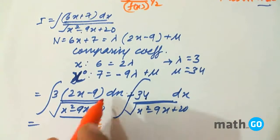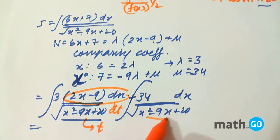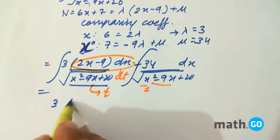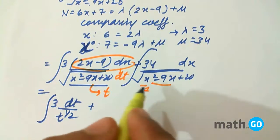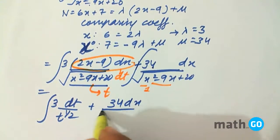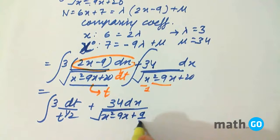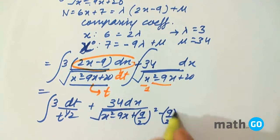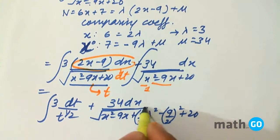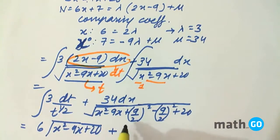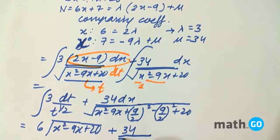If this is t then this becomes dt. We have to convert this. The coefficient of x square is already 1 so we have to convert it in the form for which formula is known. We're left with 3 into dt plus 34 dx upon the perfect square we have to do: x square minus 9x plus 9 by 2 whole square minus 9 by 2 whole square plus 20, which becomes 34 upon x minus 9 by 2 whole square.